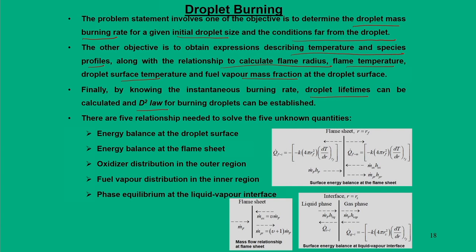There are five equations that need to be invoked: energy balance at the droplet surface, energy balance at the flame sheet, oxidizer distribution in the outer region, fuel vapour distribution in the inner region, and phase equilibrium at the liquid-vapor interface — using the Clausius-Clapeyron equations.